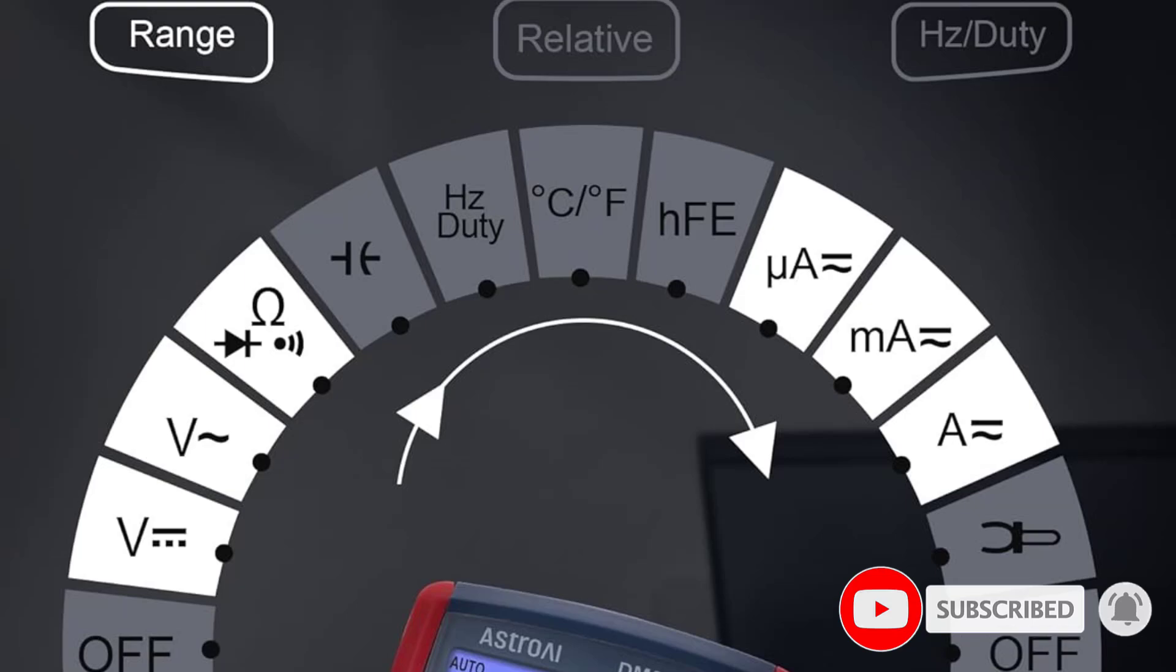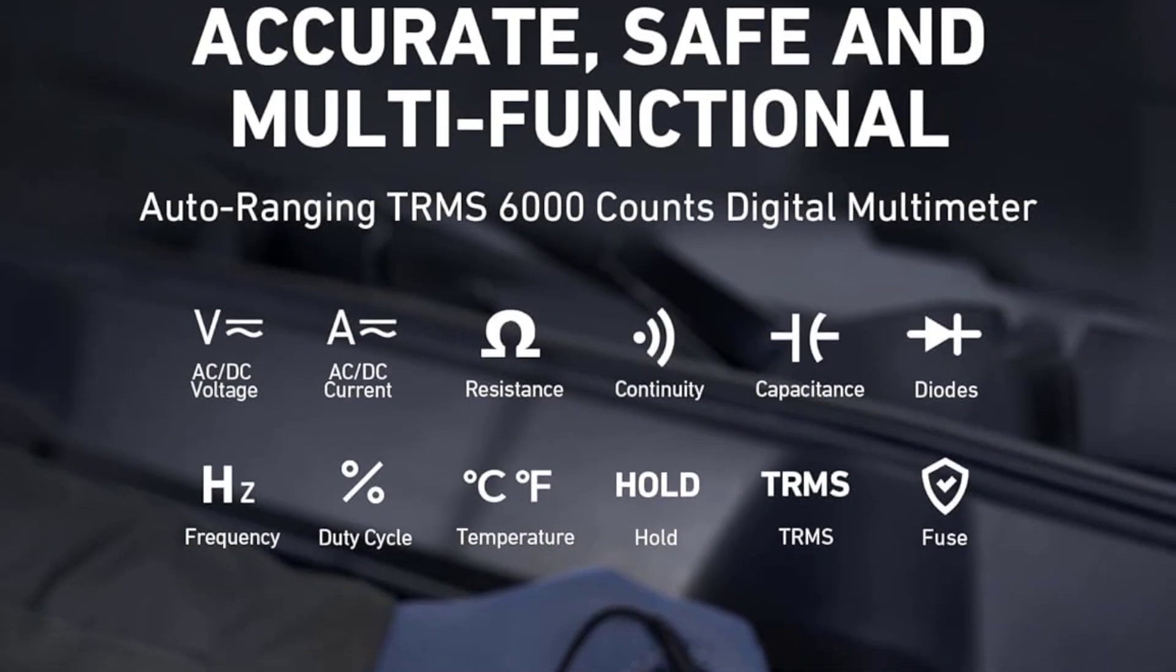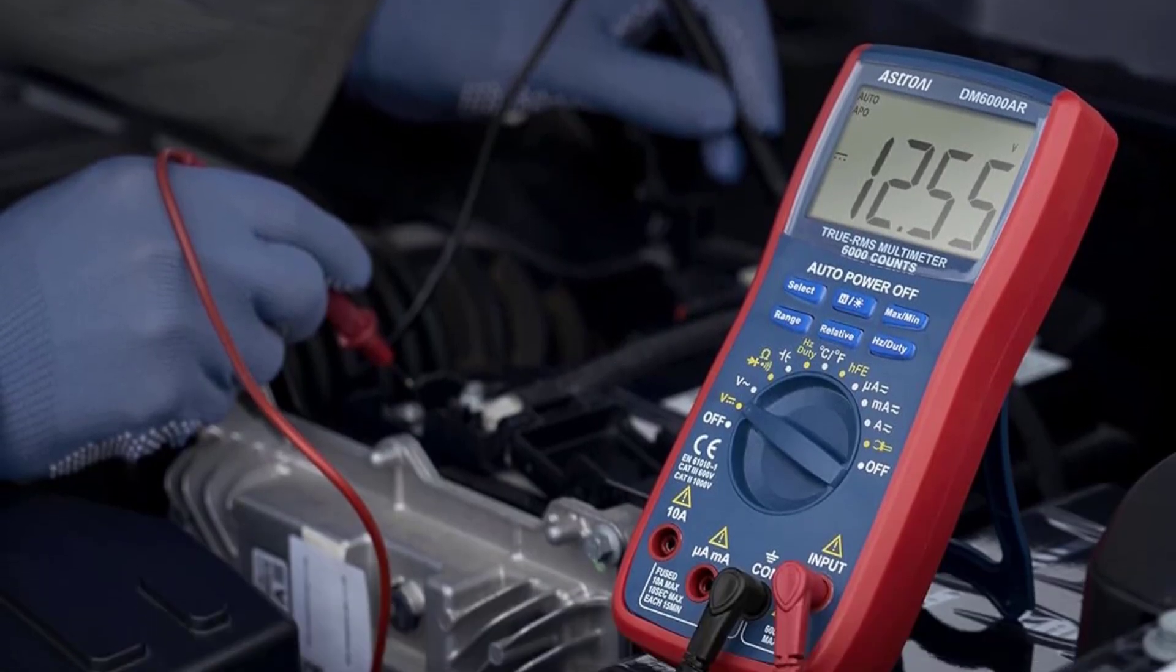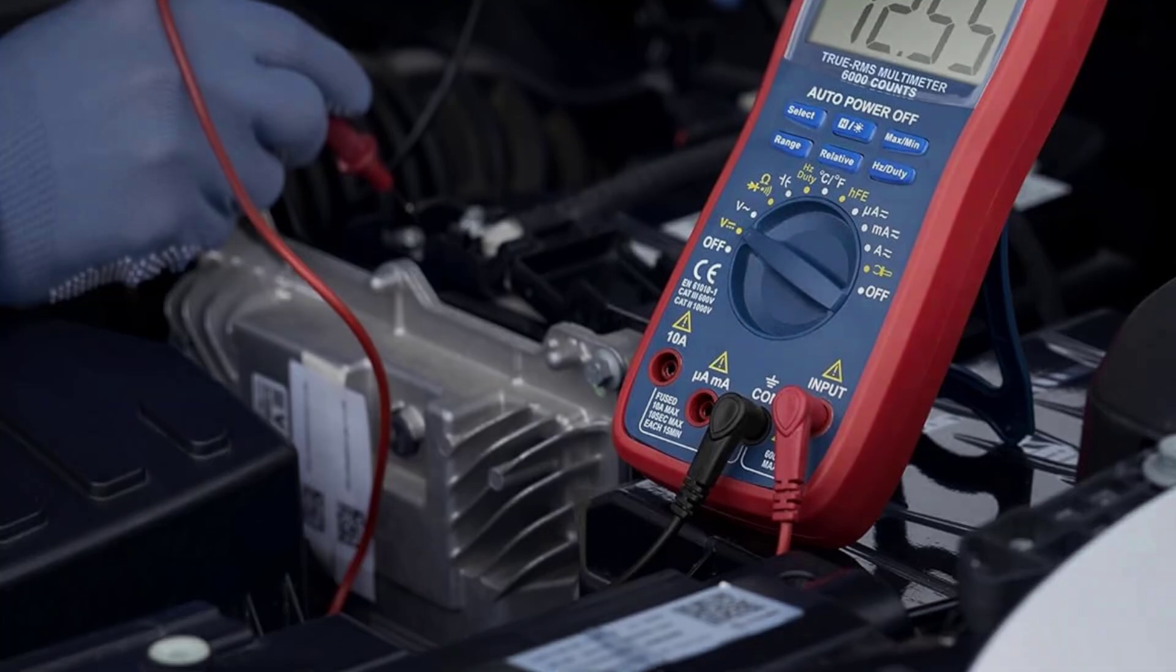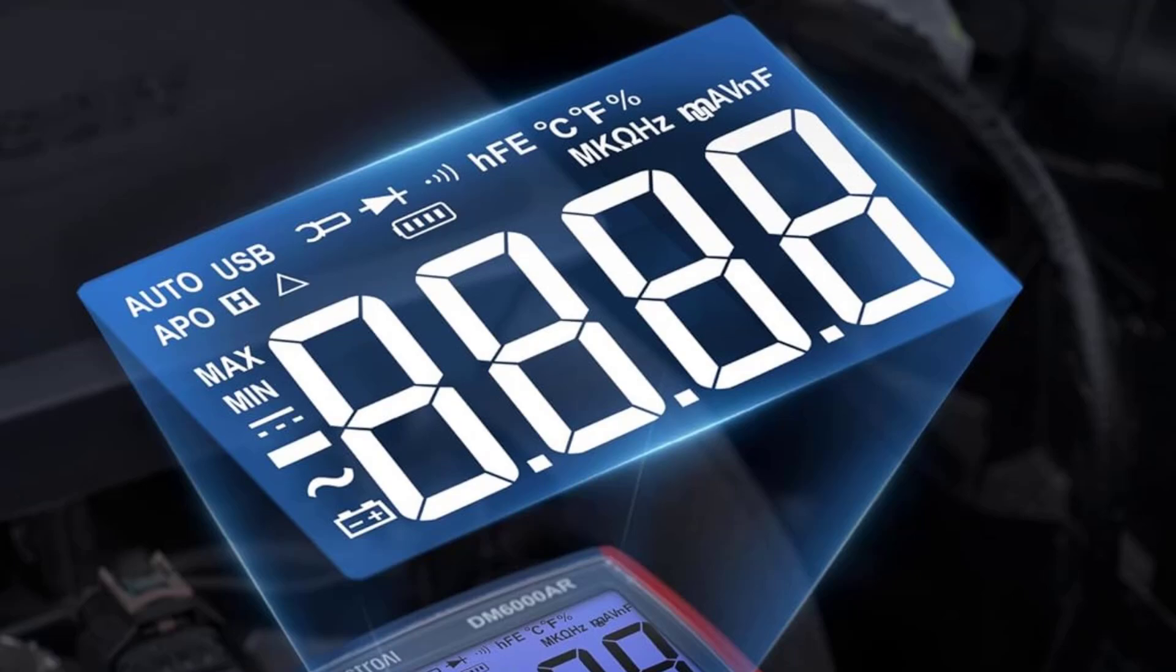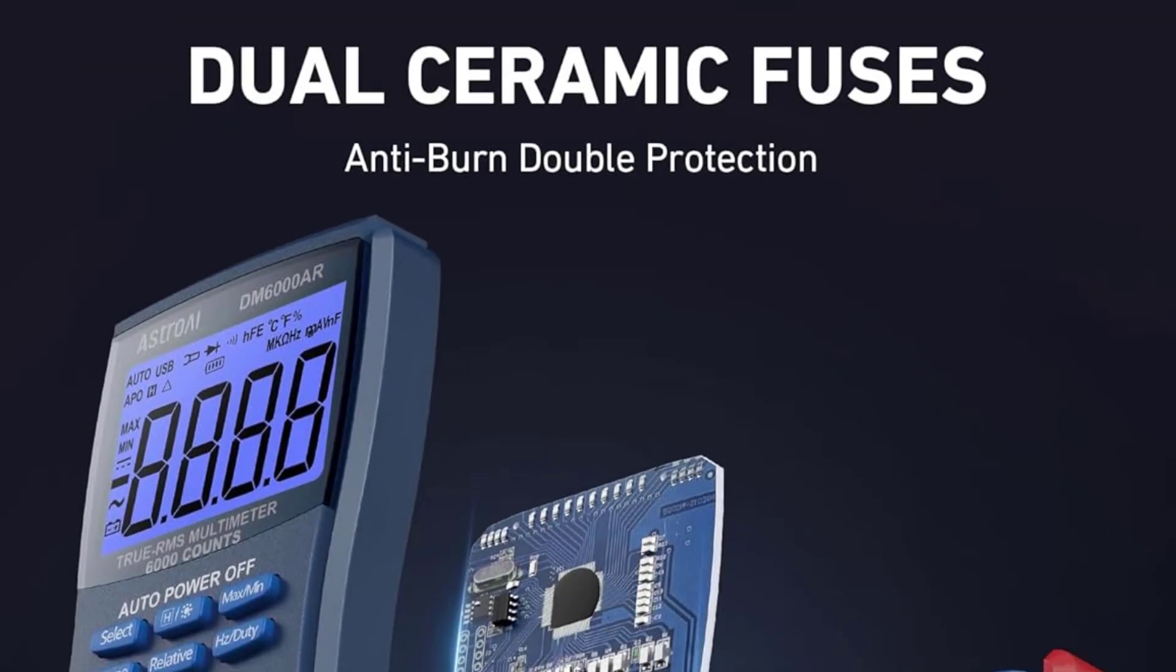While we really like the Astro AI 6000, it does have some minor shortcomings to consider. For instance, the magnetic hanger is not incredibly strong, so you might unintentionally knock it off if you are using it to adhere the meter to a magnetic object. Furthermore, the magnet has a tendency to collect metal flakes, component leads, dirt, and other loose metallic objects.